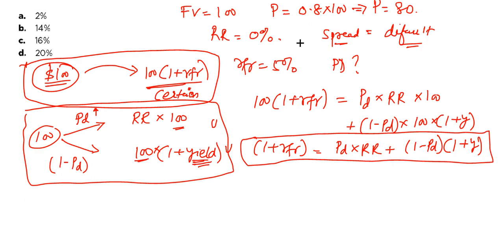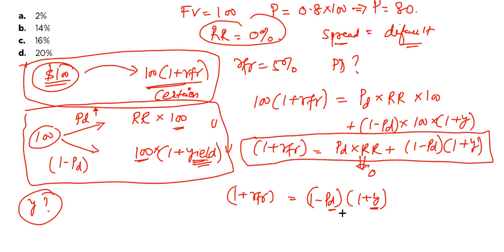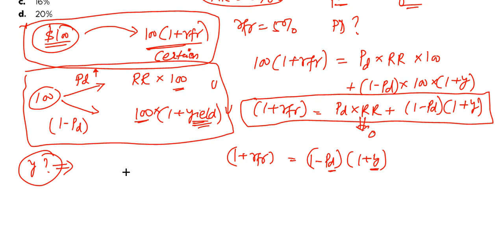Now in this question they have given that the recovery rate is 0. So this is going to become 0. So you have 1 plus RFR will be equal to 1 minus PD into 1 plus Y. Now Y is we have to compute this Y. Because here in this equation probability of default is unknown and Y is unknown. So please ensure that you compute this Y. How you are going to compute this Y?